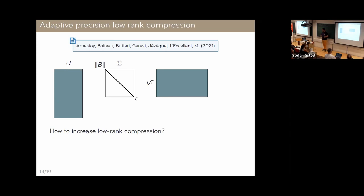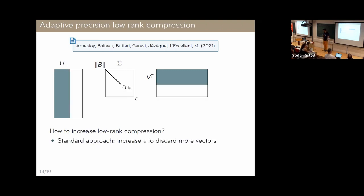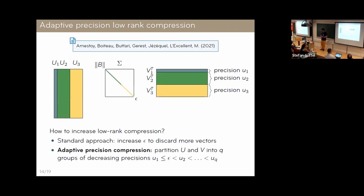The second example, still within the adaptive precision framework, applies the idea to low-rank approximations — a different piece of work, joint with colleagues across France. We have a low-rank approximation of a block B of the matrix A that we want to solve. If the rank is quite large, we're not happy with the compression rate. The standard approach would be to increase the threshold and discard more singular vectors for a more compact but less accurate approximation.